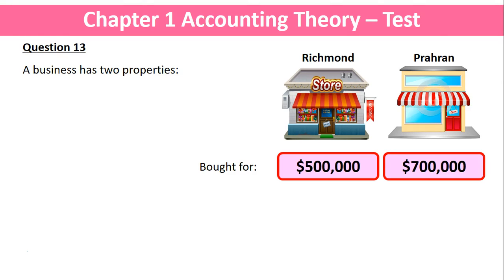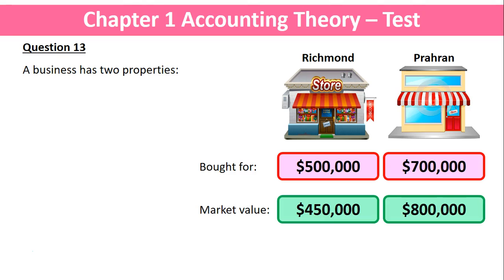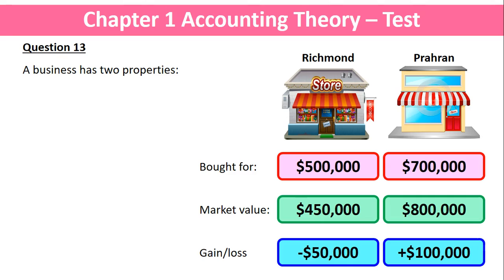Let's say we've got a business owner who owns two properties. One's in Richmond, bought for $500,000, and one's in Paran, bought for $700,000. The value of property changes over time, so today the market value of the Richmond property is $450,000, and the market value of the Paran property is $800,000. That means there's a gain or a loss on each property.